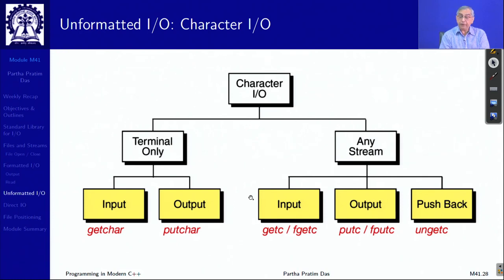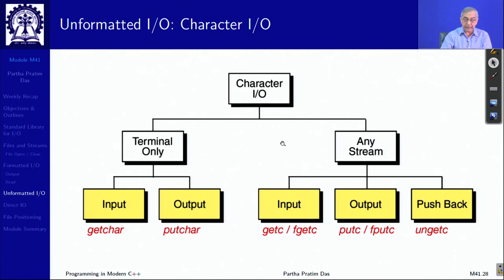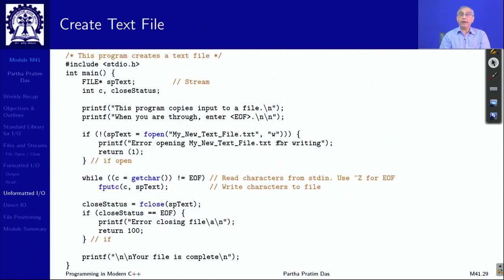I/O can also be unformatted, reading character by character. For terminal I/O, getchar and putchar handle individual character input/output. For any stream, getc or fgetc reads from a file stream, and putc or fputc writes to one. A text file example using these functions is provided — please try it on your system.